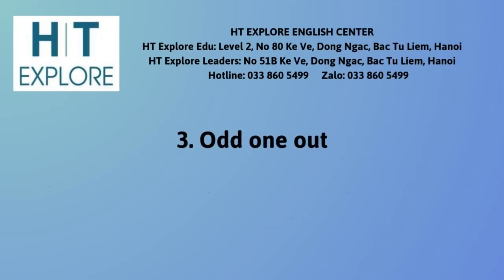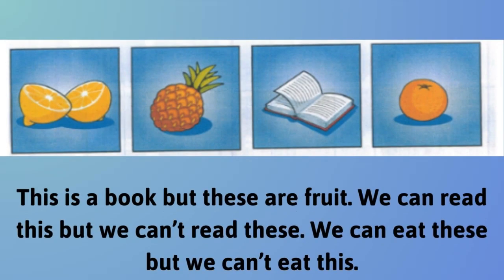Odd One Out. This is a book, but these are fruit. We can read this, but we can't read these. We can eat these, but we can't eat this.